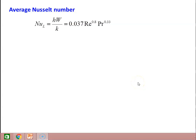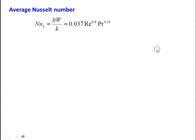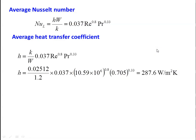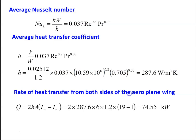Average Nusselt number for turbulent flow: Nu = hW/k = 0.037 × Re⁰·⁸ × Pr⁰·³³. Average h = (k/W) × 0.037 × Re⁰·⁸ × Pr⁰·³³ = (0.02512 / 1.2) × 0.037 × (1.059 × 10⁷)⁰·⁸ × (0.705)⁰·³³ = 287.6 W/m²·K. Heat transfer from both sides: Q = 2 × h × A × ΔT = 2 × 287.6 × (6 × 1.2) × (19 − 1) = 74.55 kW.